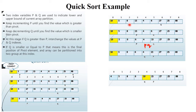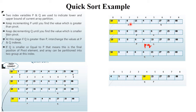After swapping, P now points to 8 and Q points to 27. Verify: is 8 smaller than pivot 10? Condition true. Is 27 greater than pivot 10? Condition true. Both conditions are true after swapping, meaning the implementation is correct. Now check again: P at 8 is smaller than 10 — condition true, move forward. Q at 27 is greater than 10 — condition true, so decrement.